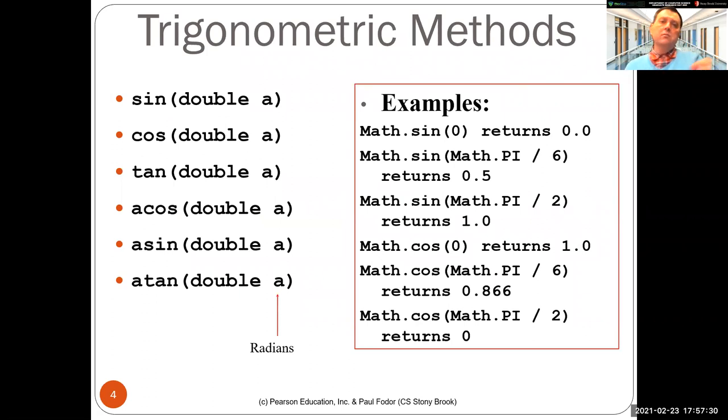So first of all, trigonometric methods. They take a double that is the number of radians. So basically, sinus takes the, is one of the methods. Sinus of zero is zero. Sinus of math dot pi divided by two is one. Basically, this is 90 degrees.